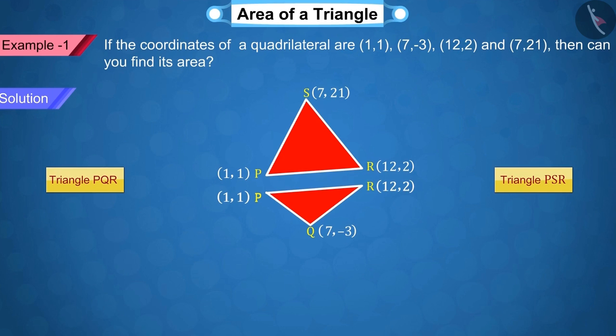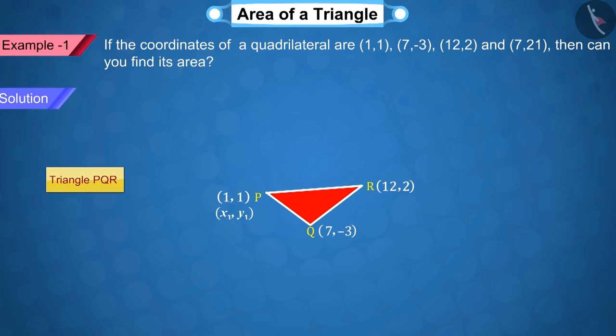With the help of which, we can find the area of the quadrilateral. Let's first observe the triangle PQR. Here, let's assume the coordinates of the point P as x₁ = 1, y₁ = 1, the coordinates of the point Q as x₂ = 7, y₂ = -3, and the coordinates of the point R as x₃ = 12, y₃ = 2.